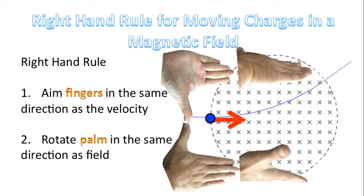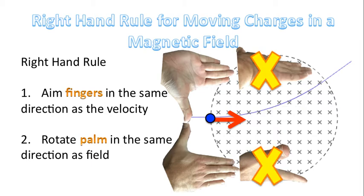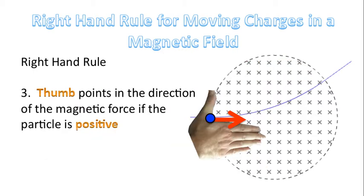Step two: rotate the palm of your hand in the same direction as the field. These are four different orientations of the palm for these style of problems. The question is, which palm faces in the same direction as the field? Well, the field is pointing inwards — this is very important — so your palm also has to face inwards. Those two hands that are facing side to side don't work. That palm faces towards you, it faces outwards. And so this is the correct orientation: fingers pointing in the direction of the velocity vector, and palm facing inwards in the same direction as the field.